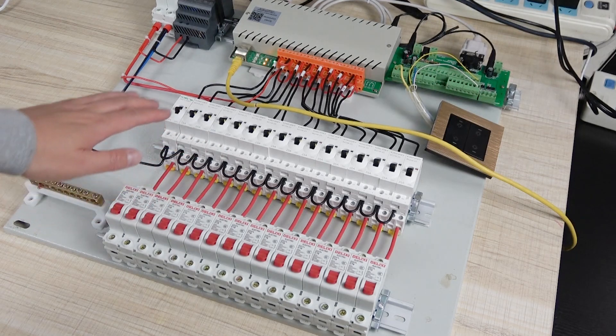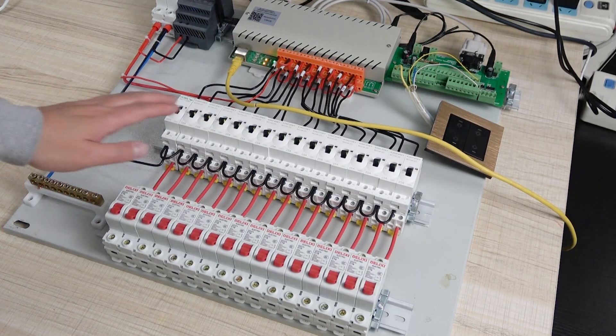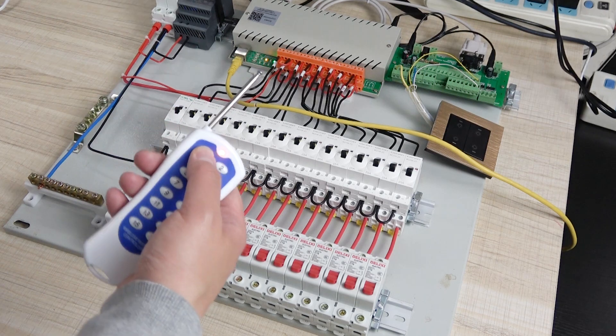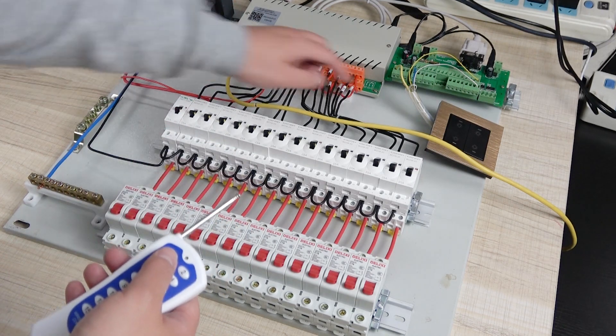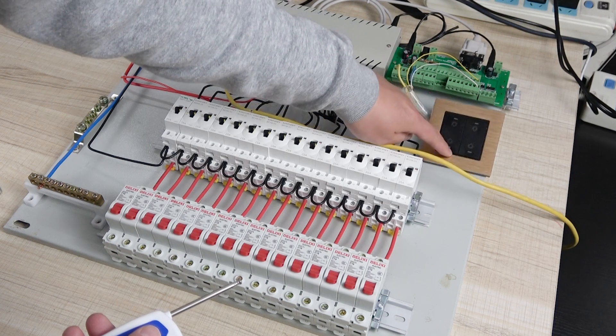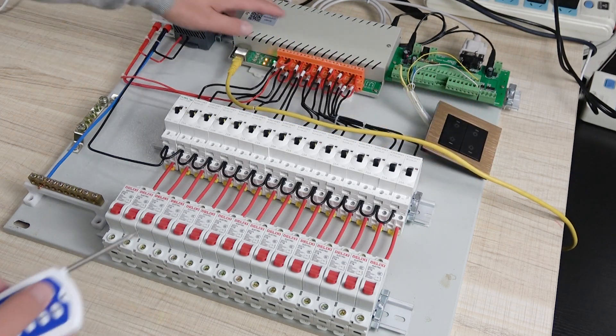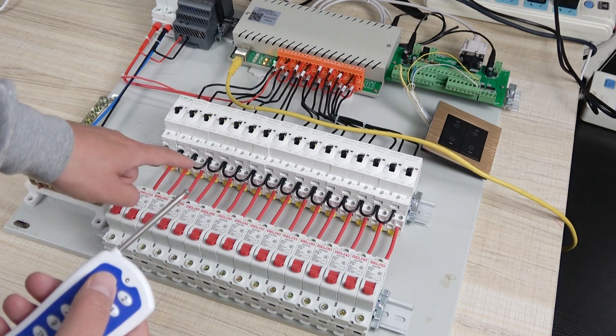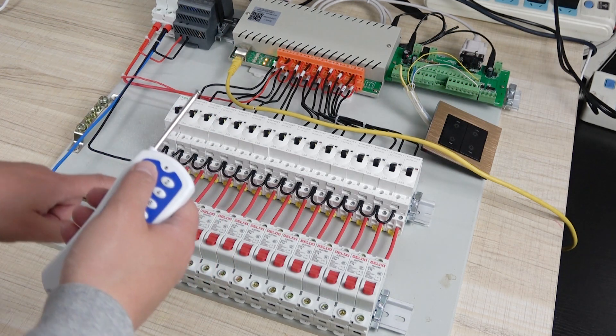Let's look at our power distribution box made with AC contactors. We can use a remote to control on-off and use switches to control on-off. We have used the relay controller to control the AC contactor to control the power output.